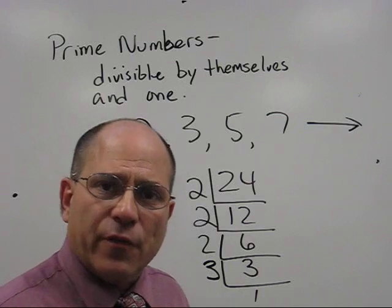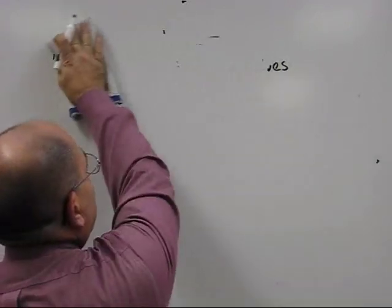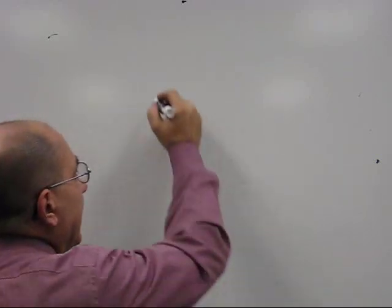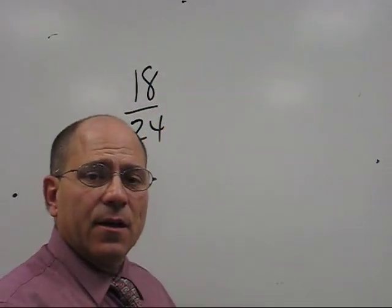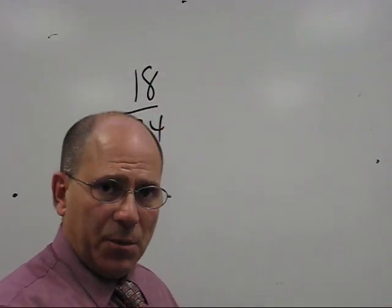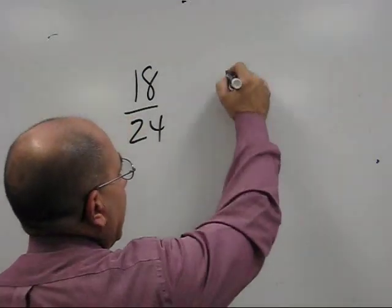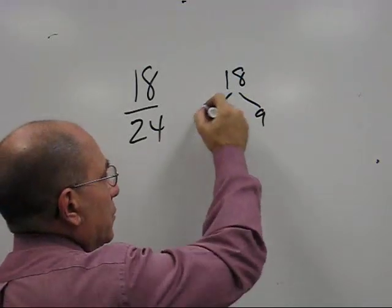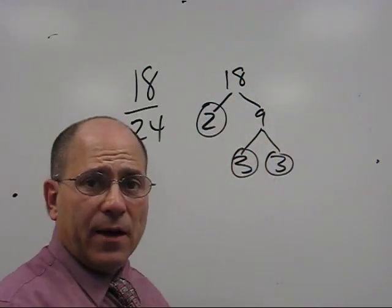Now how do we use this when we reduce fractions? Well let me show you. If you have a fraction that says something like 18/24, a method for doing this using the prime factoring method, and I'll use the tree the first time, would be to take 18 and prime factor it. 2 times 9, circle the 2, 3 times 3 and circle both of them and we've got our primes.